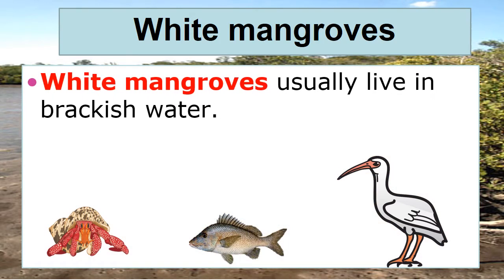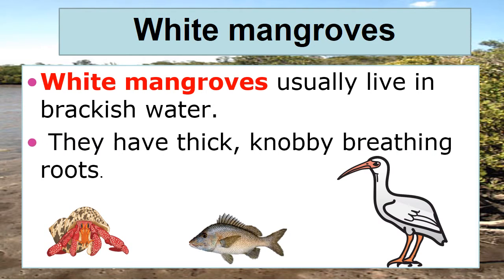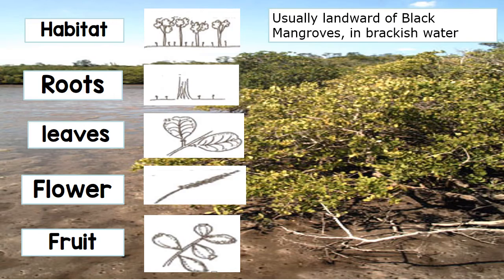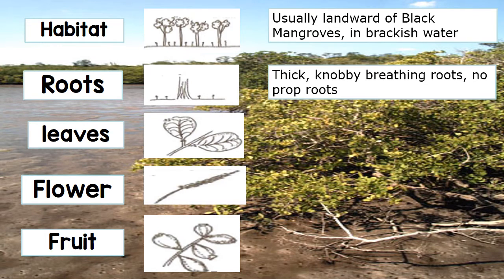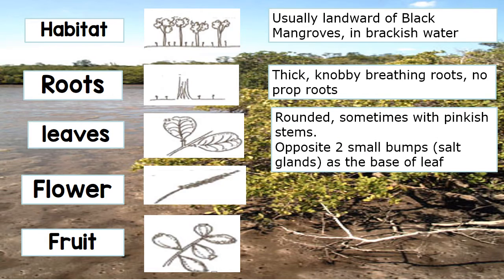Third is the white mangroves. The white mangroves usually live in brackish water. The habitat of the white mangroves is usually landward of the black mangroves in brackish water. The roots are thick, knobby breathing roots with no prop roots. The leaves are round, sometimes with pinkish stems, opposite, with two small bumps — or salt glands — at the base of the leaf.